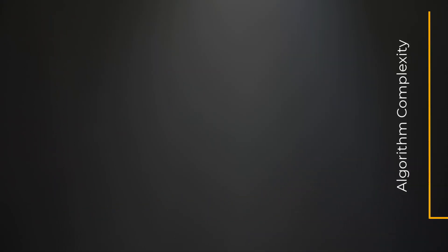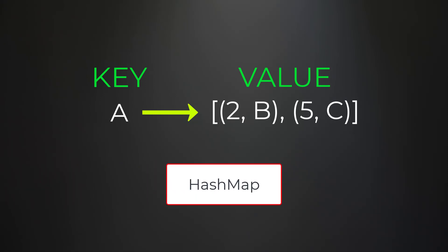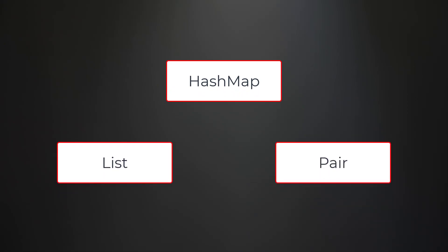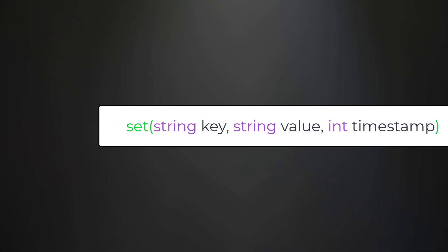Now we need to decide what data structures to use. Whenever we map a key to a value, you should immediately think of a hash map. The key of our hash map will be the key from our set operation, and the values will be a growing list of pairs where each pair is the value and timestamp from the set operation. So we'll use three data structures: a hash map, a list, and a pair. The set operation implementation is easy with this structure.